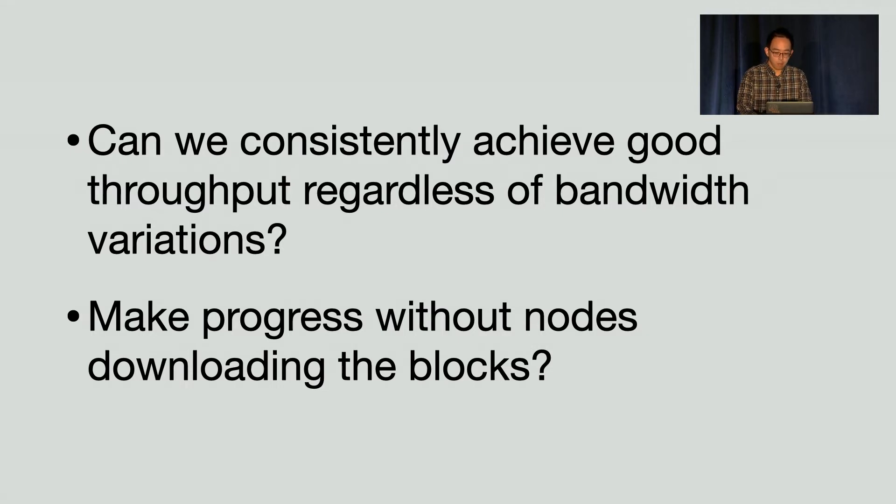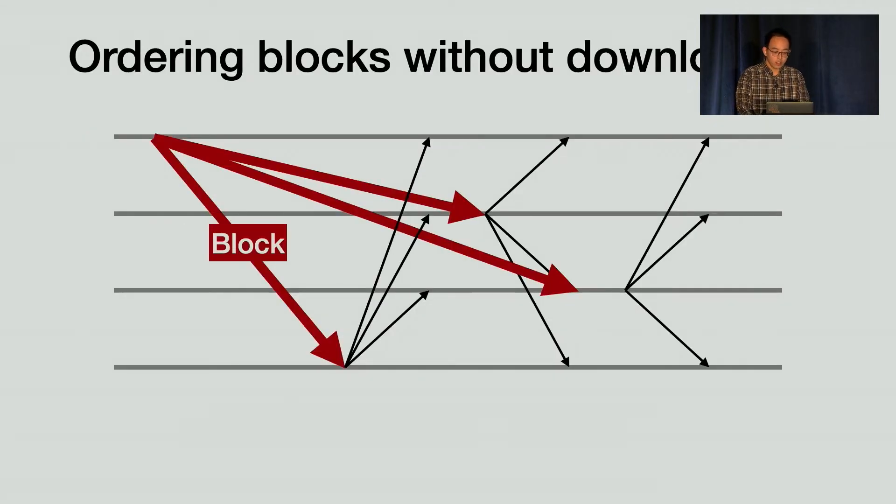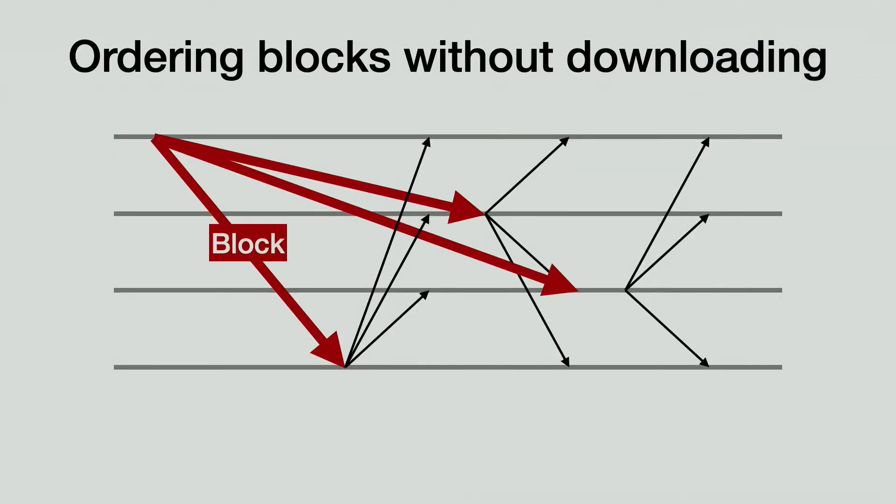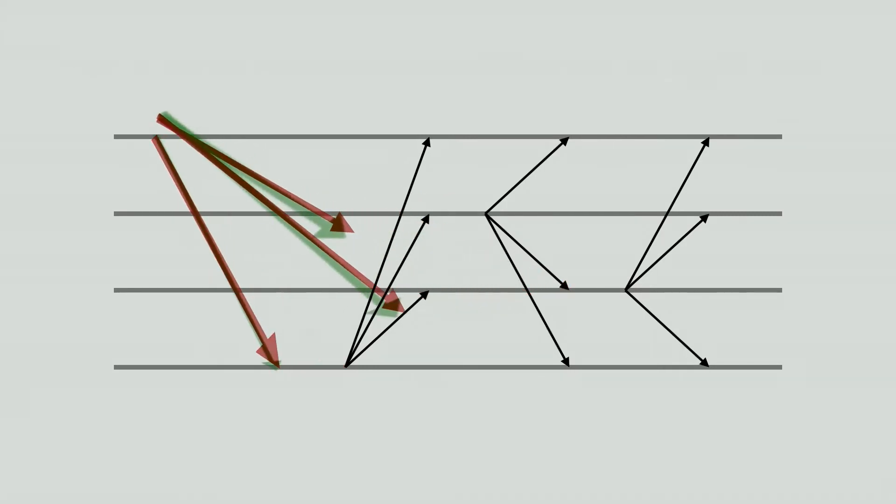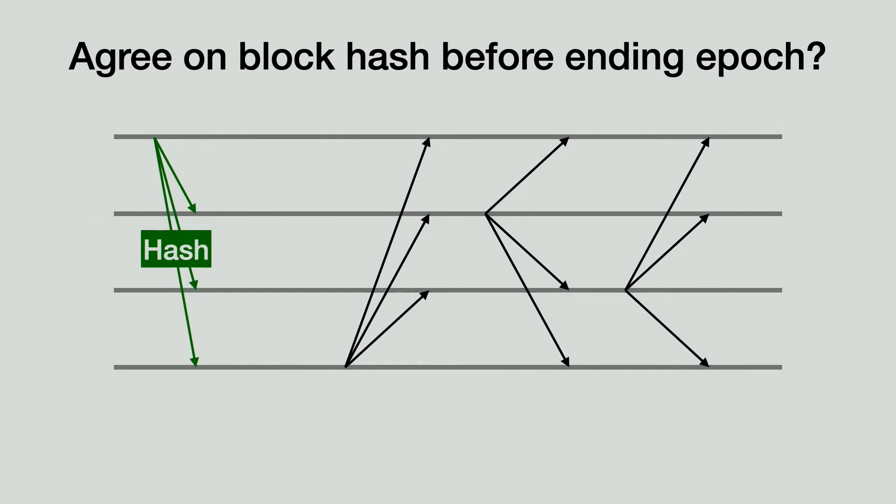Is it possible? Apparently, the nodes must agree on the ordering of new blocks. Our key observation is that they do not need to first download the blocks. Instead, they only need to agree on the hashes of the blocks. The node proposing a block should broadcast its hash instead of the block itself. Because the hashes are small, even nodes with low bandwidths can receive them quickly, so no one is a straggler.